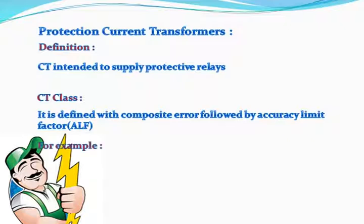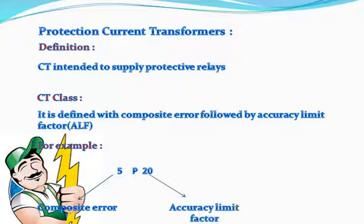For example, consider 5P20, in which 5 is the composite error, P denotes protection, and 20 is the accuracy limit factor.